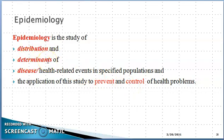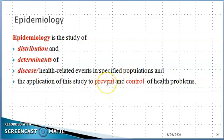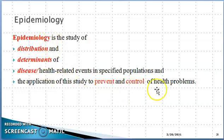We look at distribution in a particular place, particular geography, and particular area, and the disease frequency — if it is less or more, what is the reason? According to these three determinants we study what we can do in a specific population: we can prevent disease, do early detection, and if the disease has already occurred, we can control it, reduce the number of cases, and minimize the contributing factors.